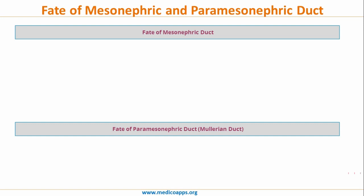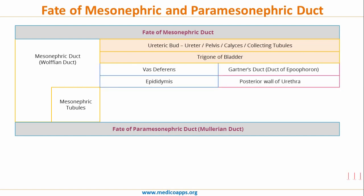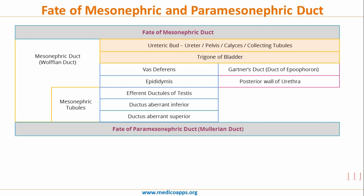Let's look at a table elaborating on the fate of the mesonephric and paramesonephric ducts in both male and female. The mesonephric duct in both males and females forms the ureteric part, giving rise to the ureter, pelvis, calyces, and collecting tubule. The trigone of the bladder is also formed by the mesonephric duct in both sexes. It forms the vas deferens in males and the Gartner's duct in females, the epididymis in males, and the posterior wall of the urethra in females. The mesonephric tubule gives rise to the efferent ductules of the testis, ductus aberrans superior and inferior in males, and correspondingly the epoophoron and paroophoron in females.